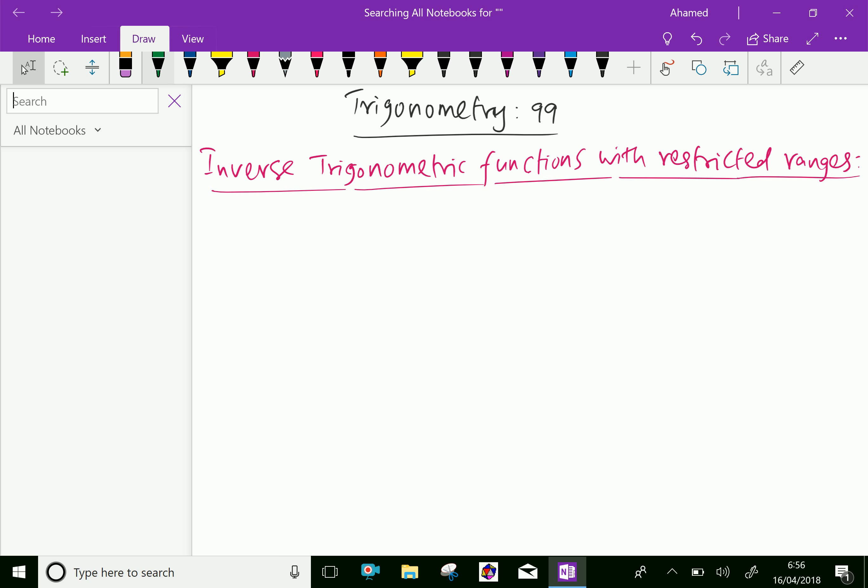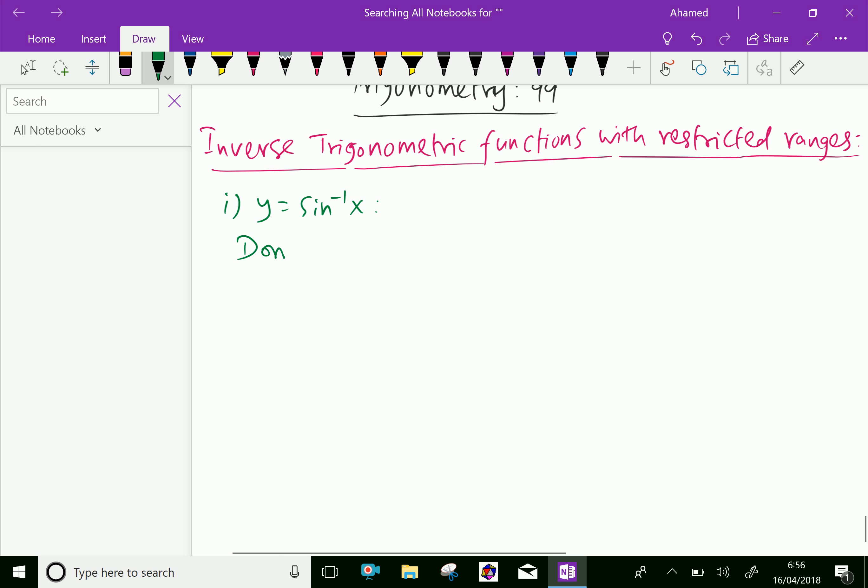Here, the first function: y equals sine inverse x. For this, the domain means the applicable value to be given for x is minus 1 less than or equal to x, less than or equal to 1. This means the domain must give values between minus 1 and 1, included with minus 1 and 1 also. Other than these values will not satisfy this function. It is called the domain of this function.